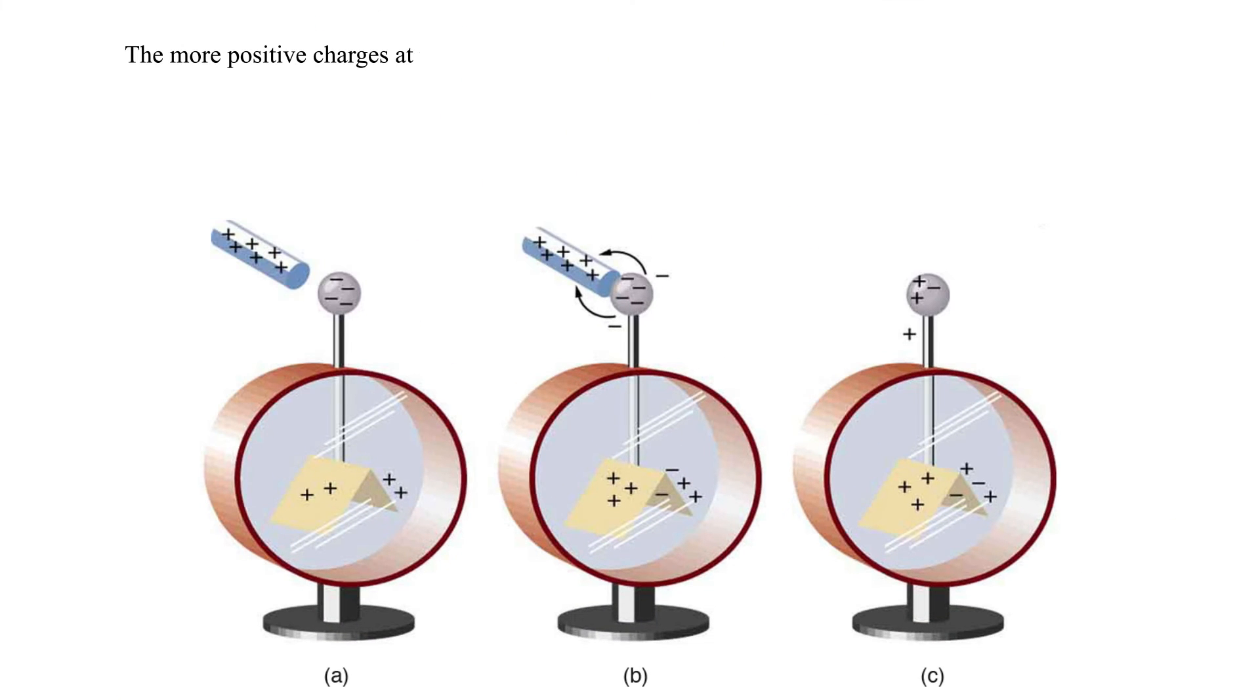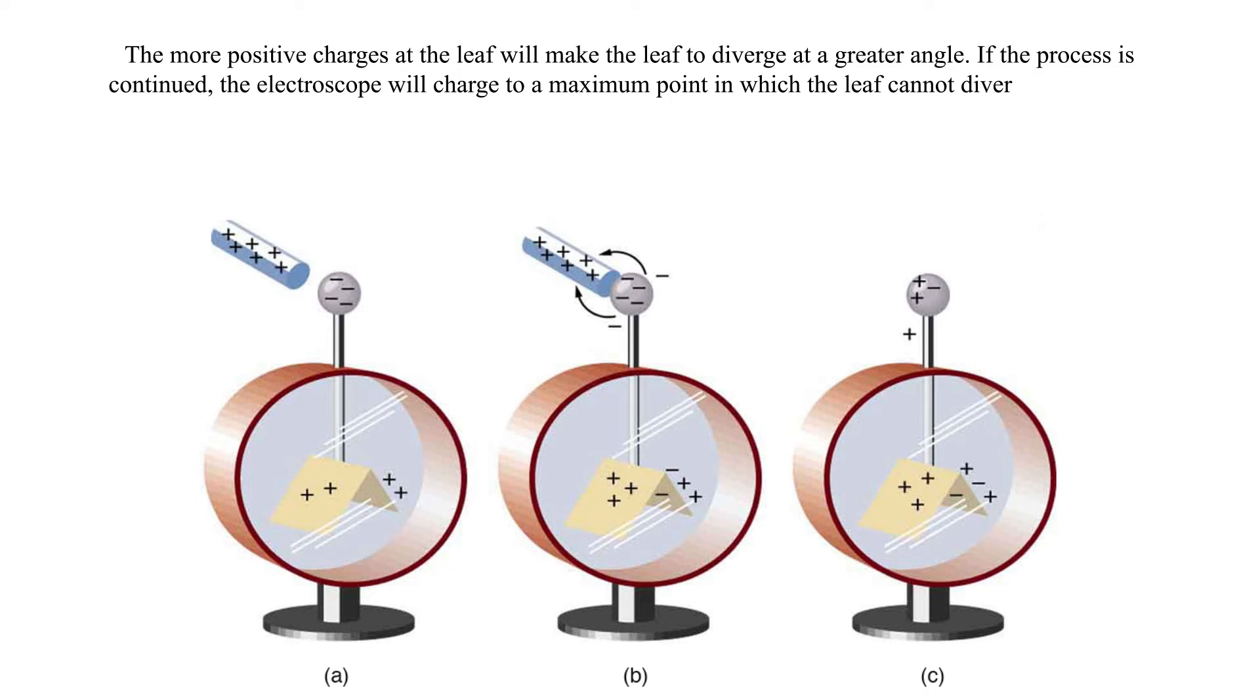The more positive charges at the leaf, the greater the angle of divergence. If the process is continued, the electroscope will charge to a maximum point in which the leaf cannot diverge any further.